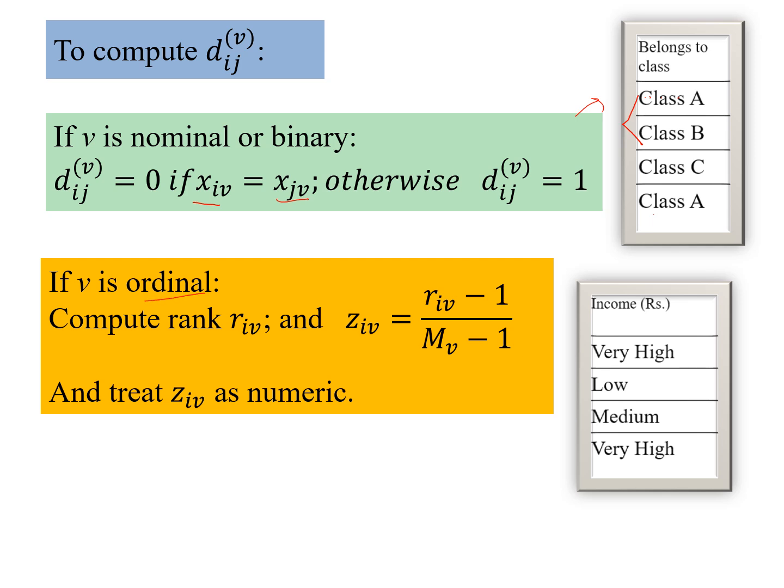Now for the ordinal, we proceed by computing rank, then the normalized rank and treating as numeric, as discussed in our previous videos. So here we have this income, which is of ordinal attribute type. So we have three ranks. We can see low, medium, very high. So low, so we would put them as 1, 2, 3.